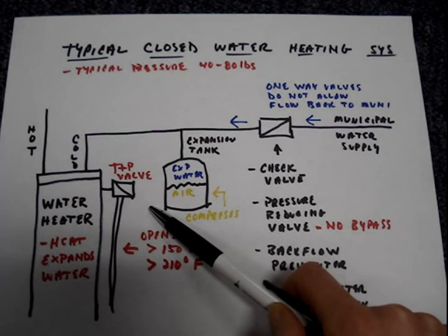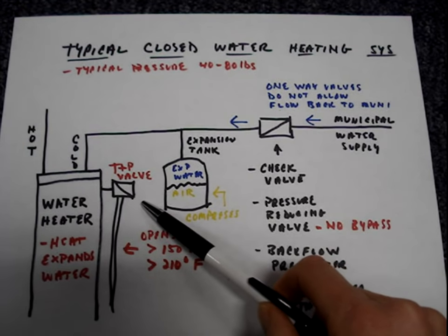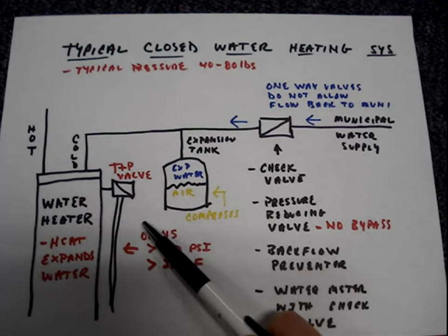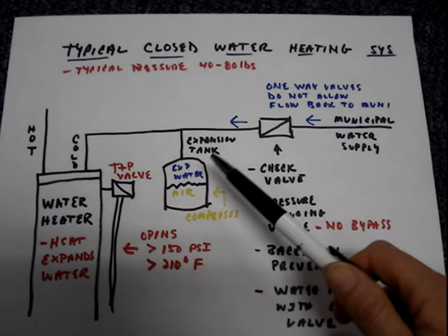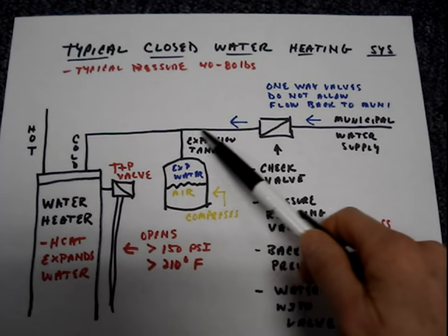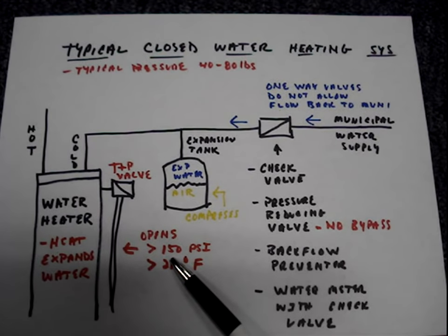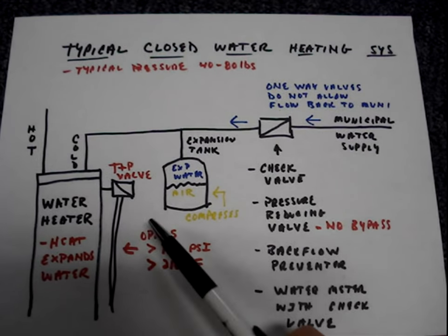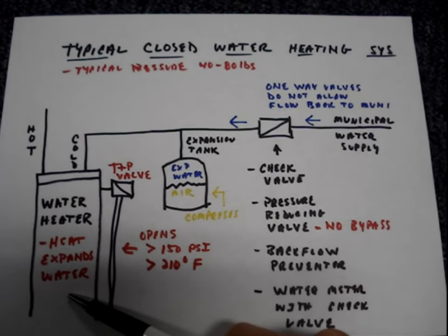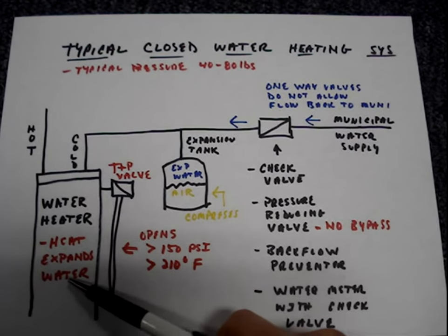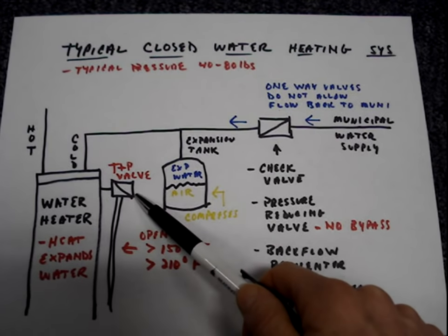All water heaters have a temperature and pressure valve. Most people just call this a pressure relief valve. I'll call this valve the TMP from now on. It has two purposes. If the pressure in the system increases above 150 psi due to thermal expansion, this valve opens and releases water. If the water heater malfunctions and the temperature increases above 210 degrees Fahrenheit, the valve will also open.